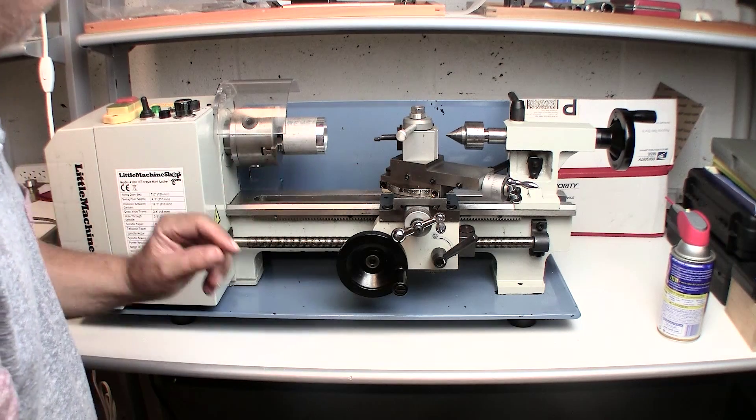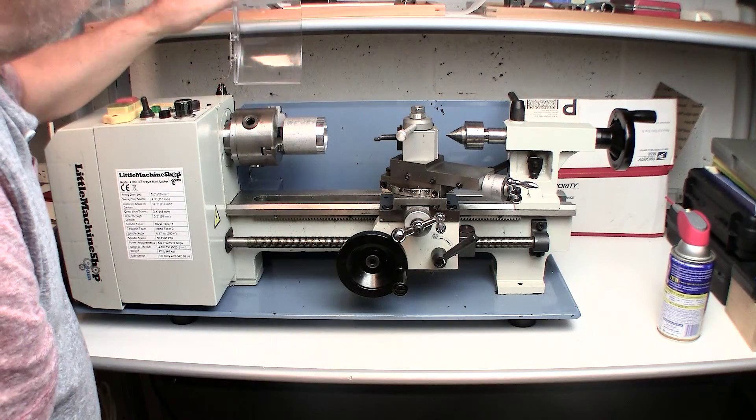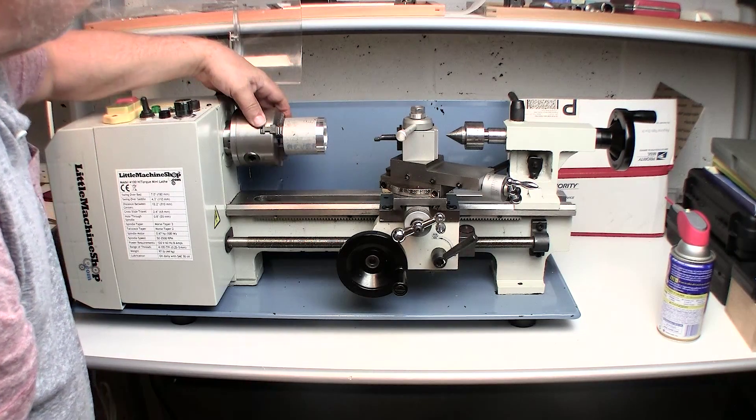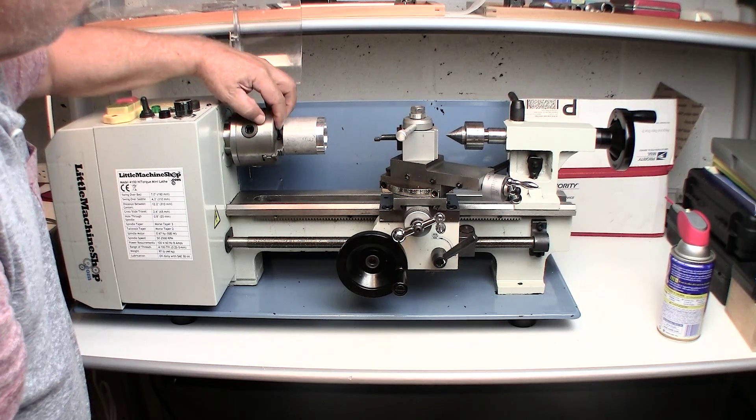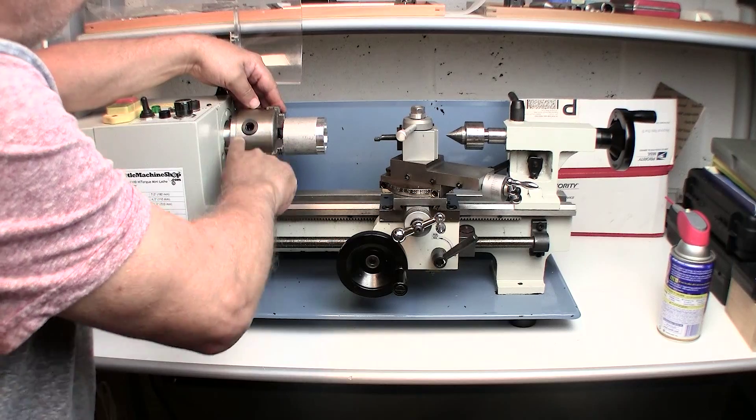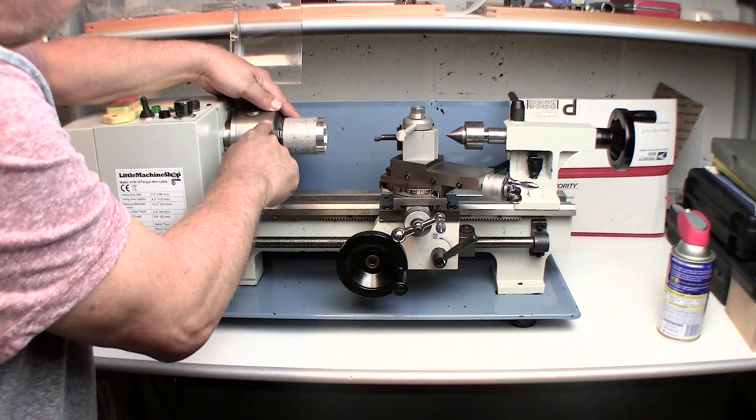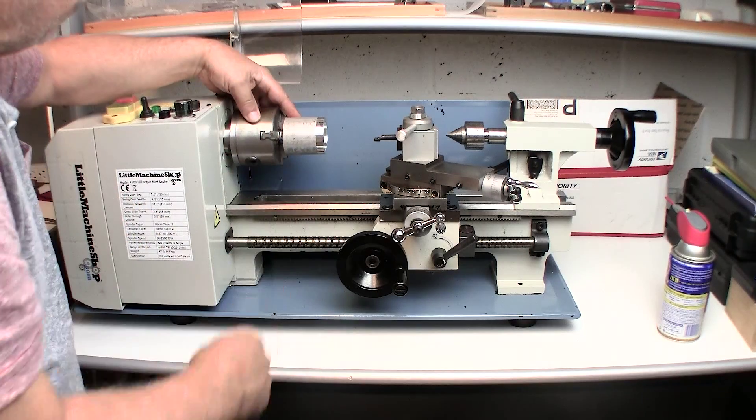Now let me go ahead and tell you a little bit more about the chuck. The standard chuck that comes with this lathe is a three jaw chuck, just like most others. Again, you can see that I really need to make sure that I keep this well oiled. It's beginning to rust slightly here. I've had this for about a year now.